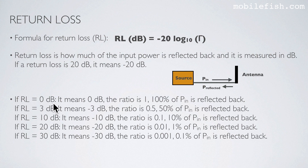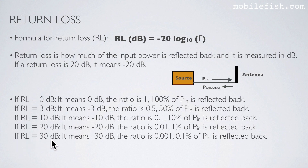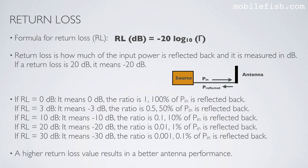If the return loss is 0 dB, the ratio is 1, which means 100% of the input power is reflected back. If the return loss is 3 dB, it means minus 3 dB and the ratio is 0.5, meaning 50% of the input power is reflected back. If the return loss is 30 dB, it means minus 30 dB and the ratio is 0.001, meaning 0.1% of the input power is reflected back. A higher return loss value results in better antenna performance.